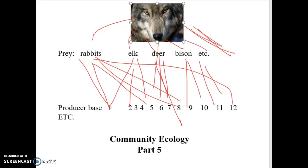Let's go ahead and wrap up the community ecology lecture. The big picture is looking at how all these different species or populations in a community interact, and if one population grows or decreases or changes, how that ripple affects the other populations. Everything is connected. There is no single species in any given community that doesn't have multiple connections to other species.